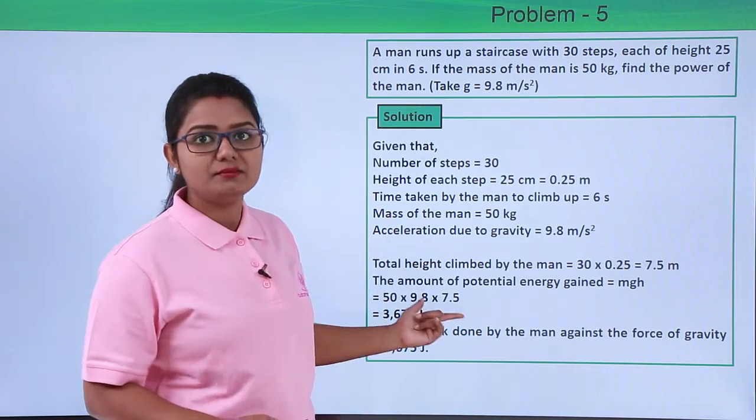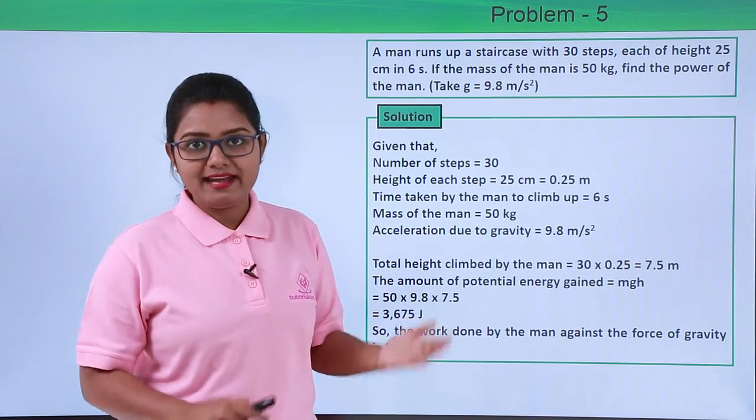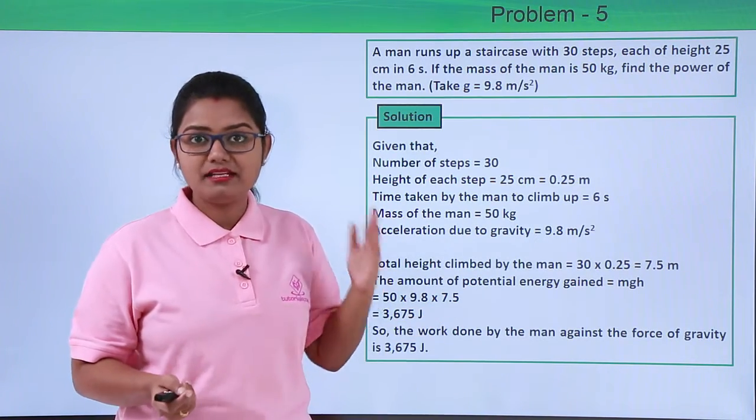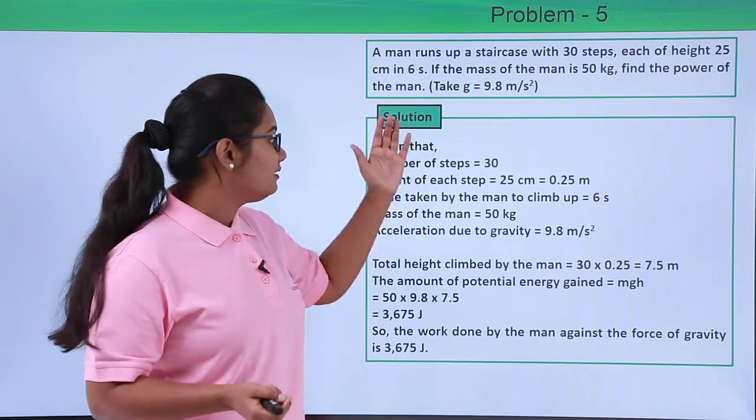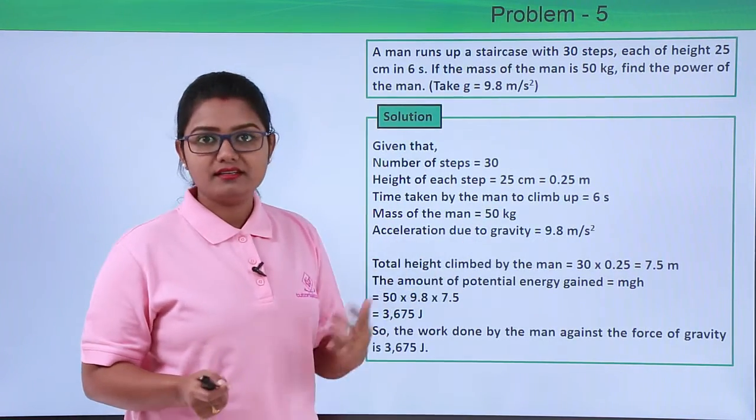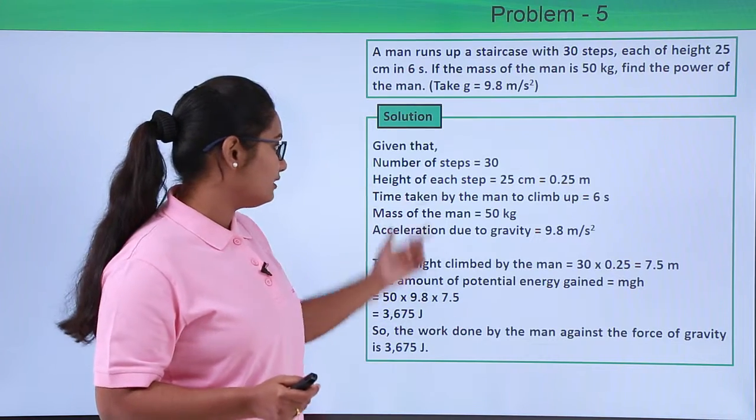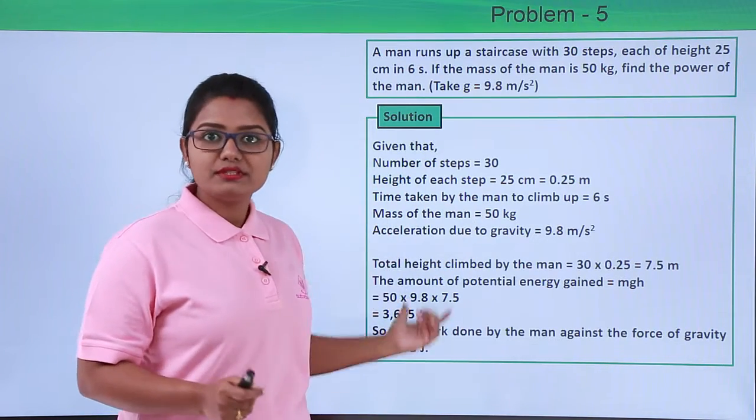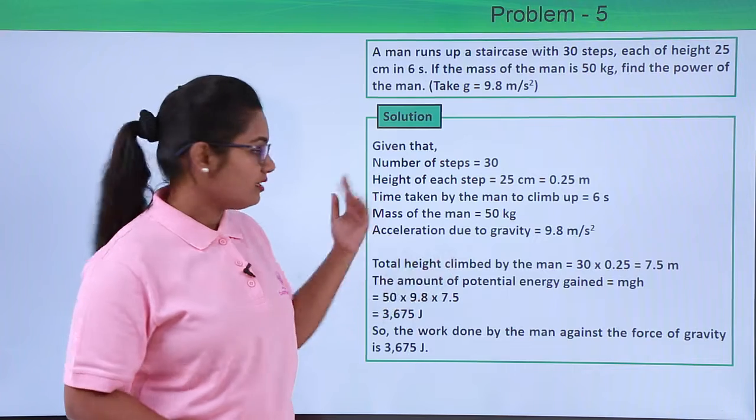So now that we have the amount of work that has been done by the man, we can easily go ahead and calculate the power of the man by dividing this work done by the time that he has taken to climb up the staircase, or the time that he has taken to do this amount of work.